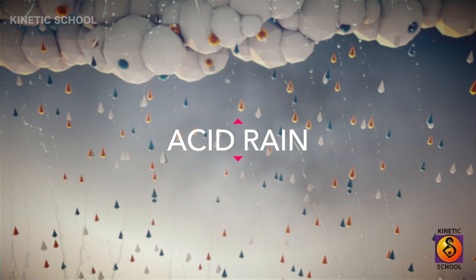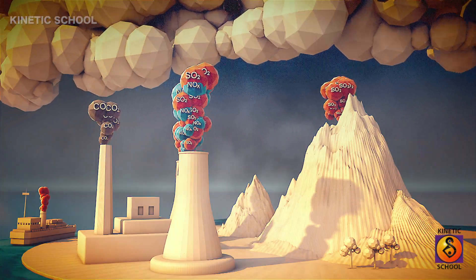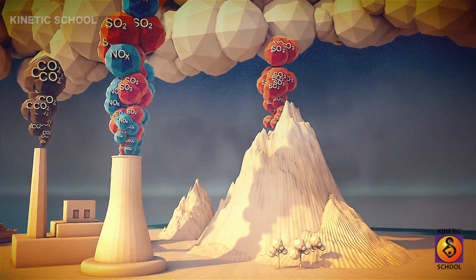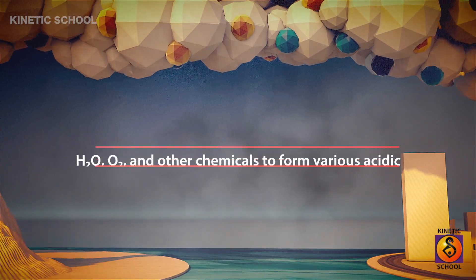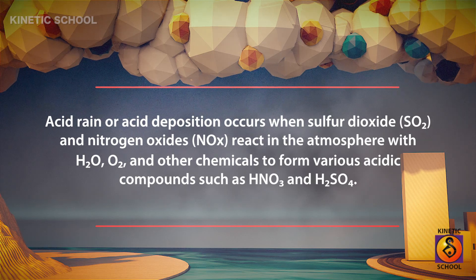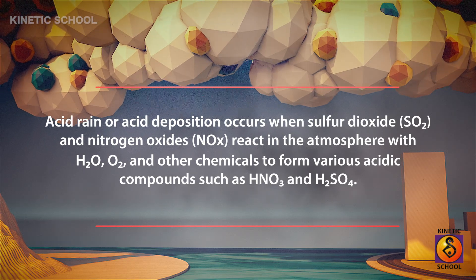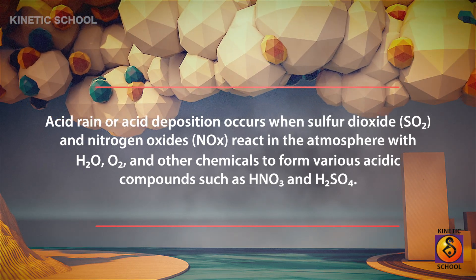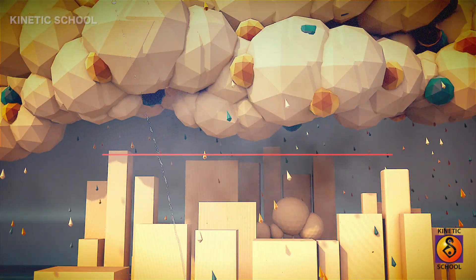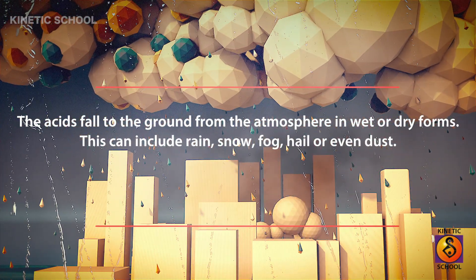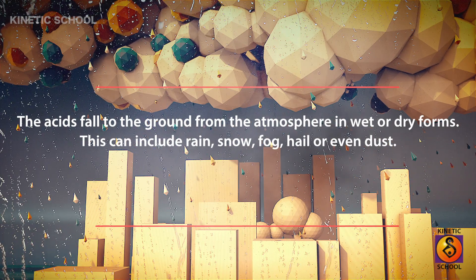Acid rain, or acid deposition, occurs when sulfur dioxide and nitrogen oxides react in the atmosphere with water, oxygen, and other chemicals to form various acidic compounds such as nitric acid and sulfuric acid. The acids fall to the ground from the atmosphere in wet or dry forms. This can include rain, snow, fog, hail, or even dust.